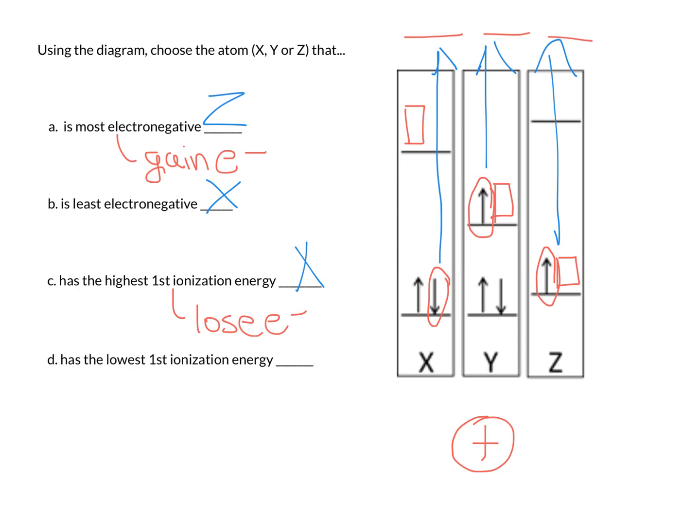On the other hand, the lowest first ionization energy will be Y, because that electron is closest to being removed away from the nucleus.